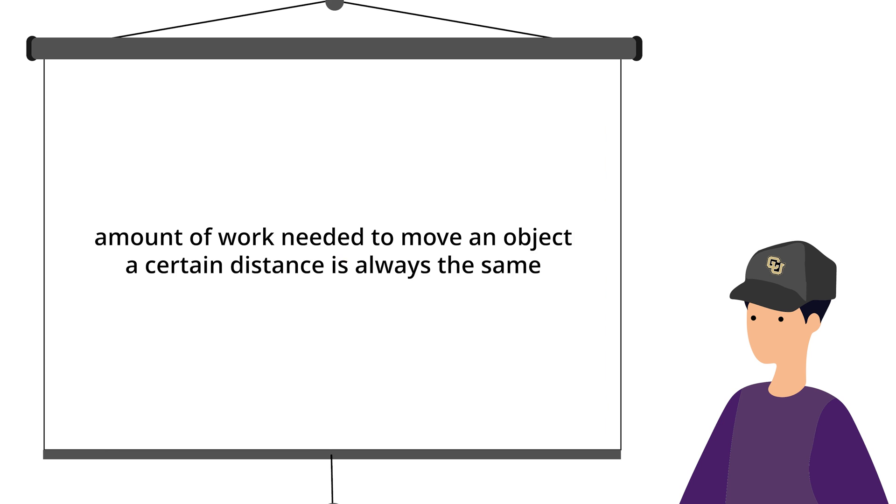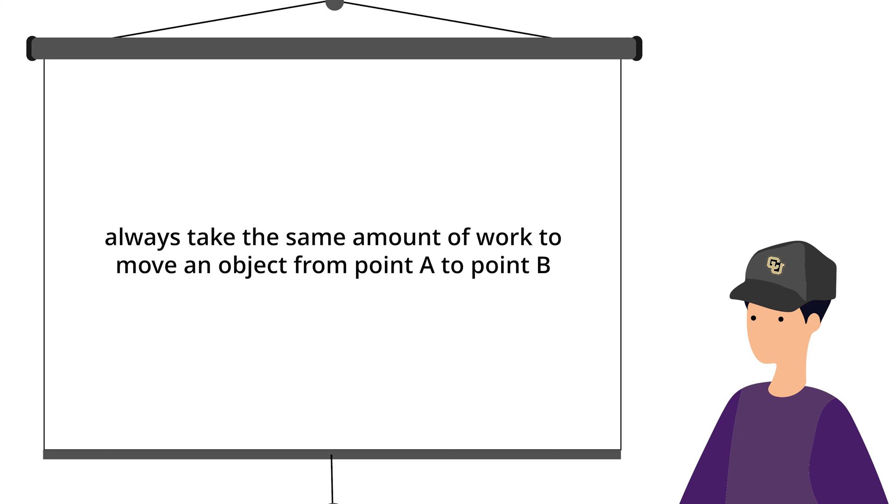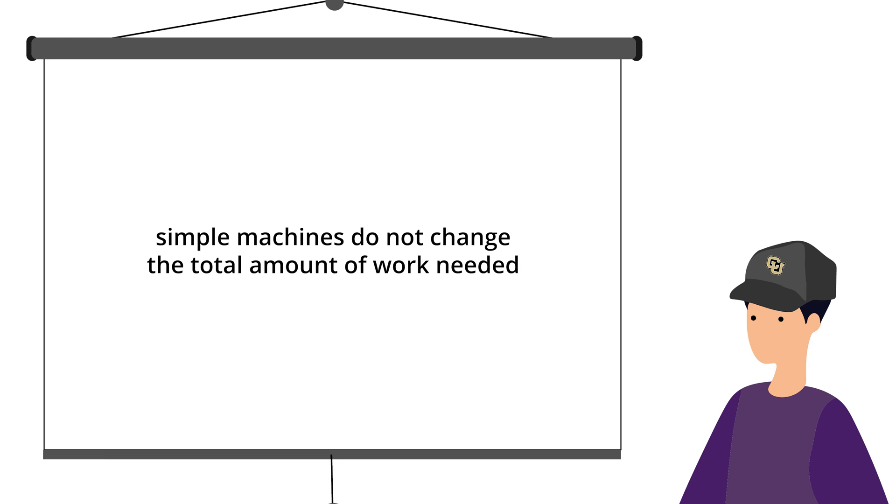Keep in mind that the amount of work needed to move an object a certain distance is always the same. Basically, that means that it will always take the same amount of work to move an object from point A to point B no matter how you get it there. The simple machines do not change the total amount of work that you have to do, but they change how it feels to do that work.